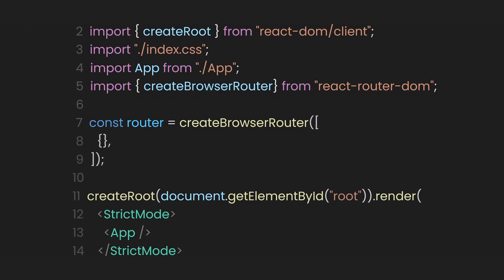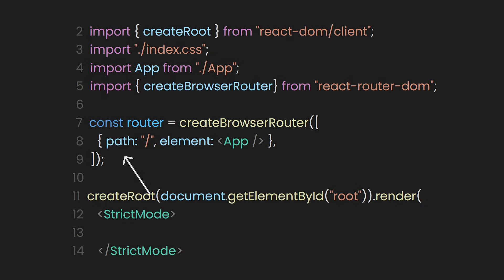Inside the array, let's add an object. Inside this object, let's define a key named path. This key will have a string value of slash, meaning that this path will be the index or home page of our app. After defining the path, let's now define the component that it will render. In our case, this will be the App component.